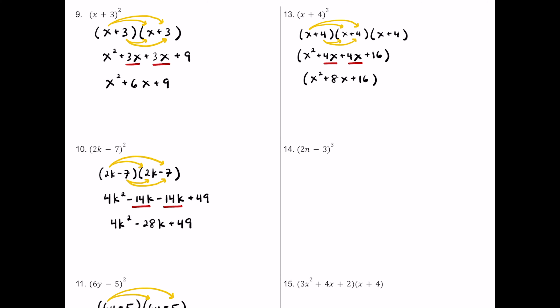Now we multiply that trinomial by the remaining x plus 4. Starting with x squared: x squared times x is x cubed. Then x squared times positive 4 is plus 4x squared. Moving to 8x: 8x times x is positive 8x squared.